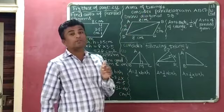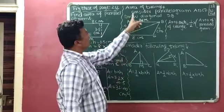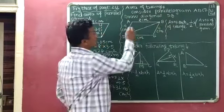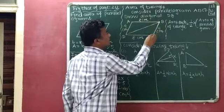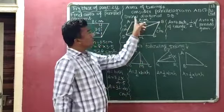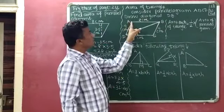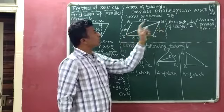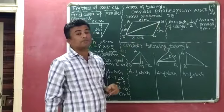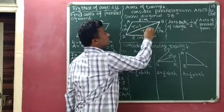Now we will discuss area of triangle. To find the area of a triangle, first we consider a parallelogram. Consider parallelogram ABCD and draw diagonal DB. This diagonal divides the parallelogram into two triangles: triangle 1 and triangle 2.